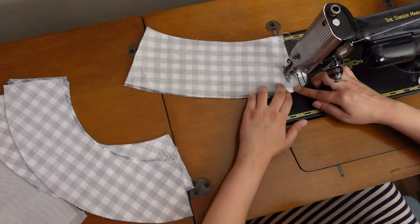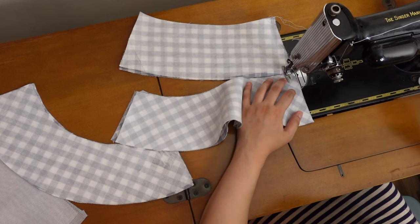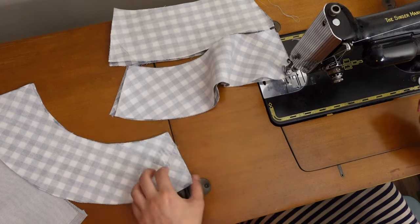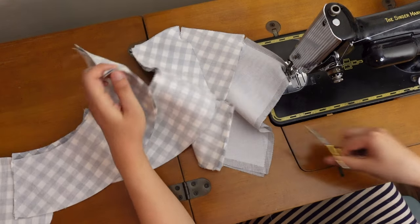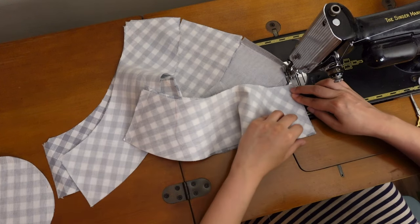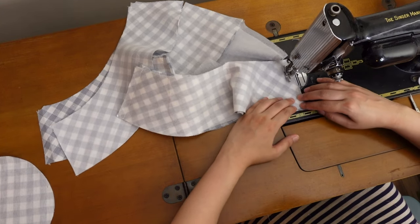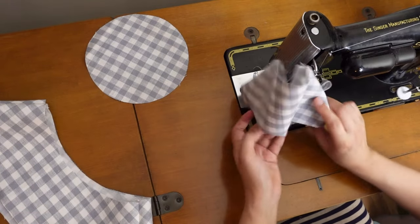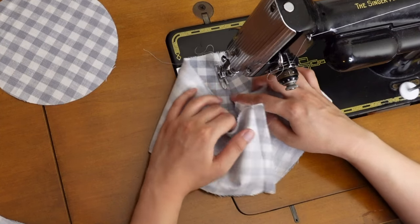First I sew all the side seams. I like to batch sew like this to save my thread. And also this way the sewing machine foot is kept leveled. Because the last section you sewed is holding up the back of the machine foot. So it's easy to start off the next section nicely. Open the seam allowances and stitch them down from the right side of the fabric.